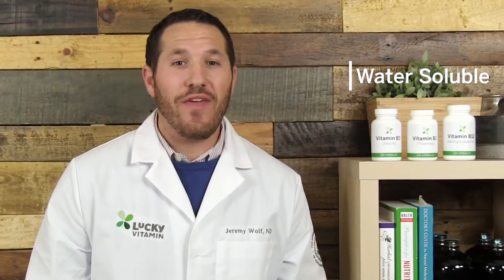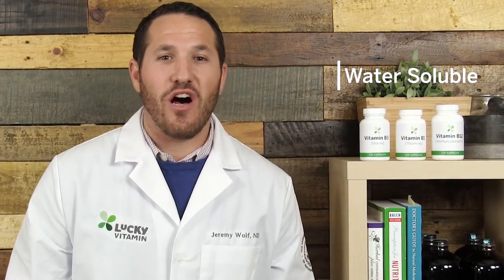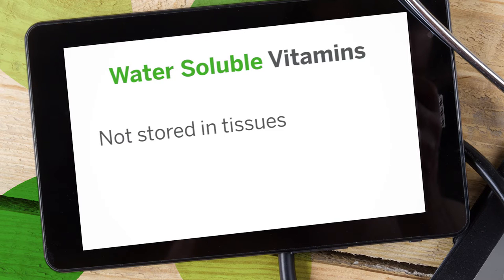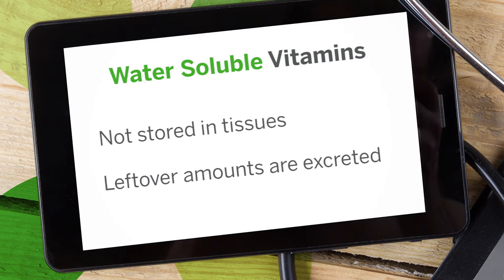Vitamins can be further broken down into water-soluble or fat-soluble vitamins. Water-soluble vitamins such as vitamin C and the eight members of the B vitamin family are vitamins that are dissolved in water. They are usually carried to the body's tissues but are not stored. Once the body uses these vitamins, leftover amounts leave the body through the urine.